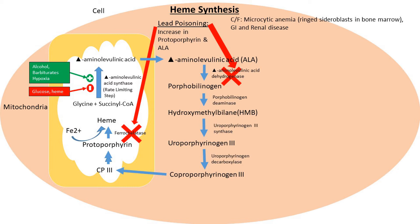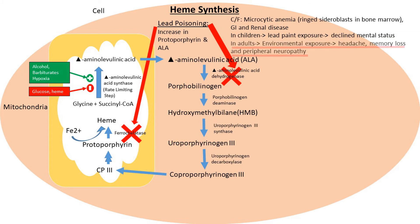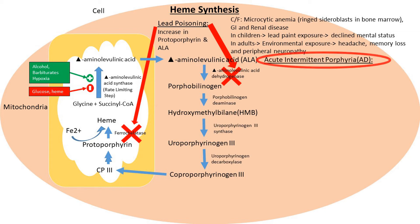Lead poisoning can also present as gastrointestinal or renal disease. A common cause in children is lead paint exposure, which can decrease their mental status. In adults, lead poisoning from environmental exposure can cause headache, memory loss, and peripheral neuropathy. We'll cover lead poisoning in detail in a separate lecture.